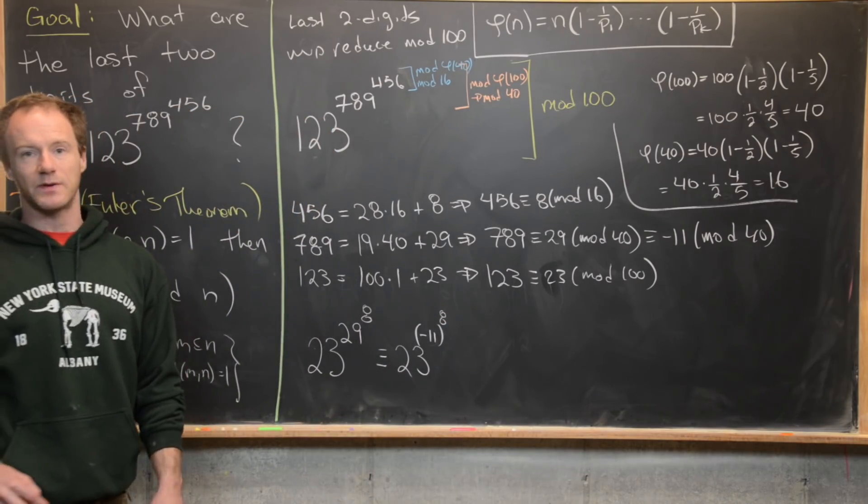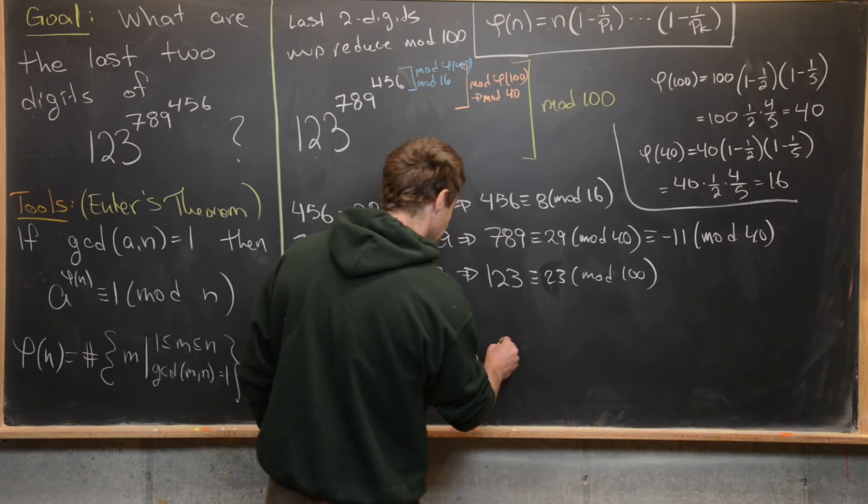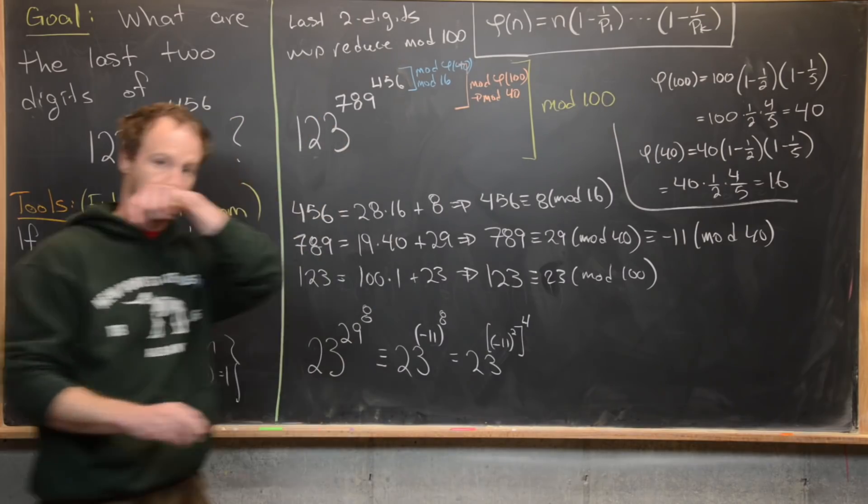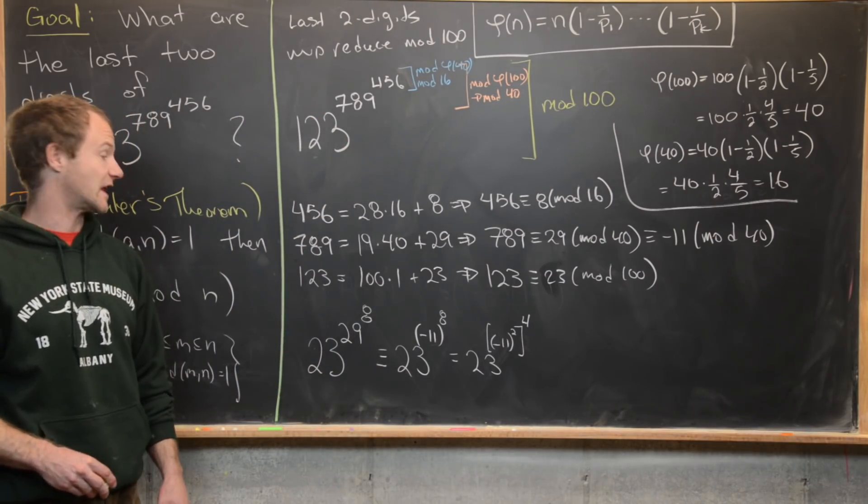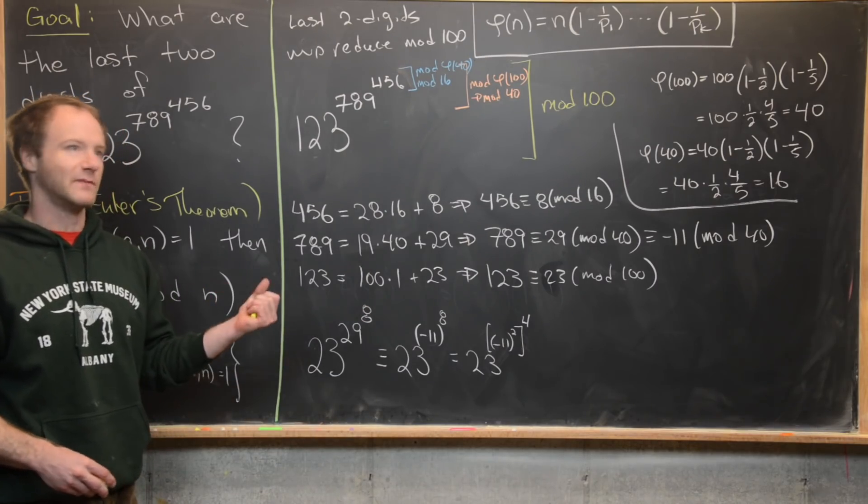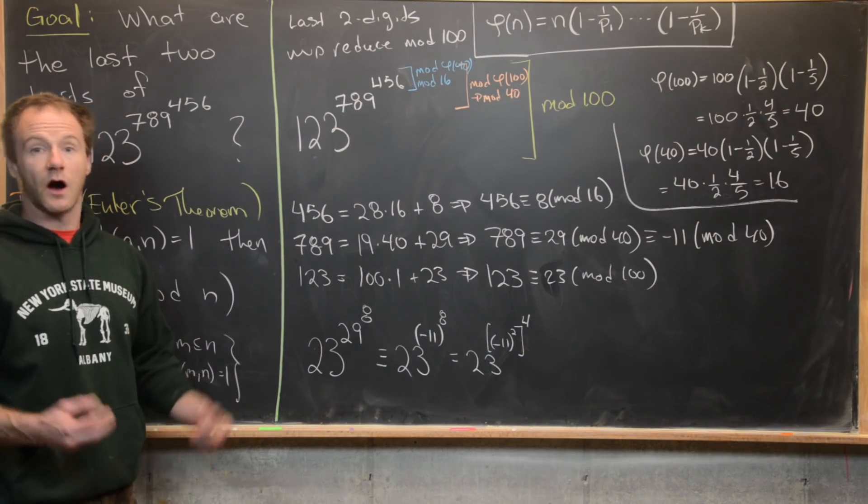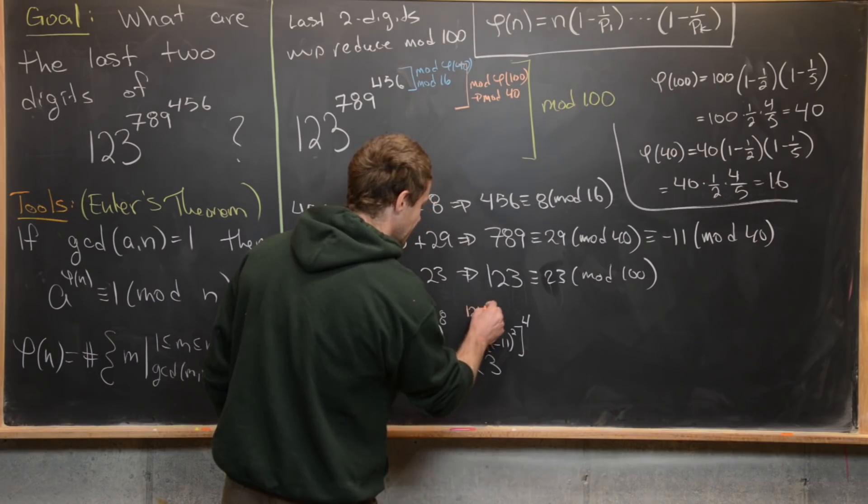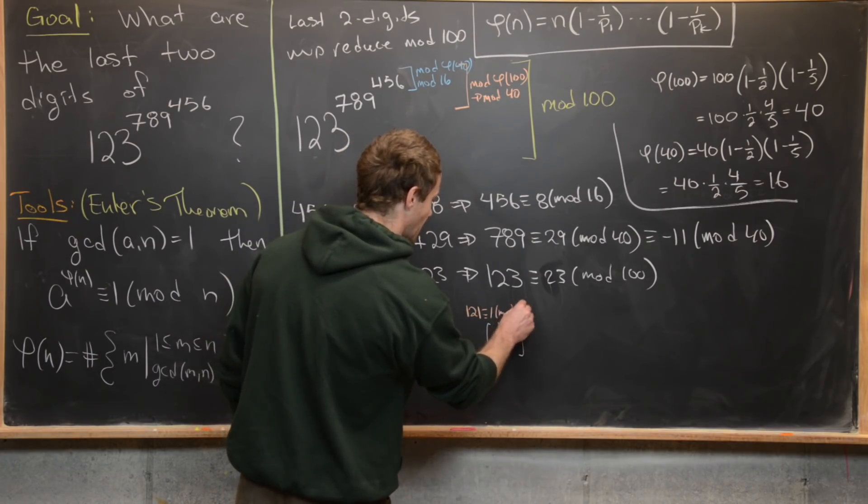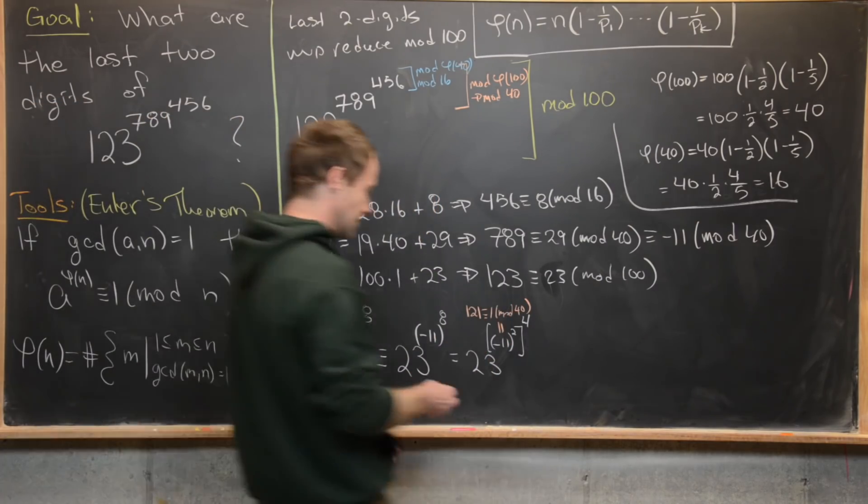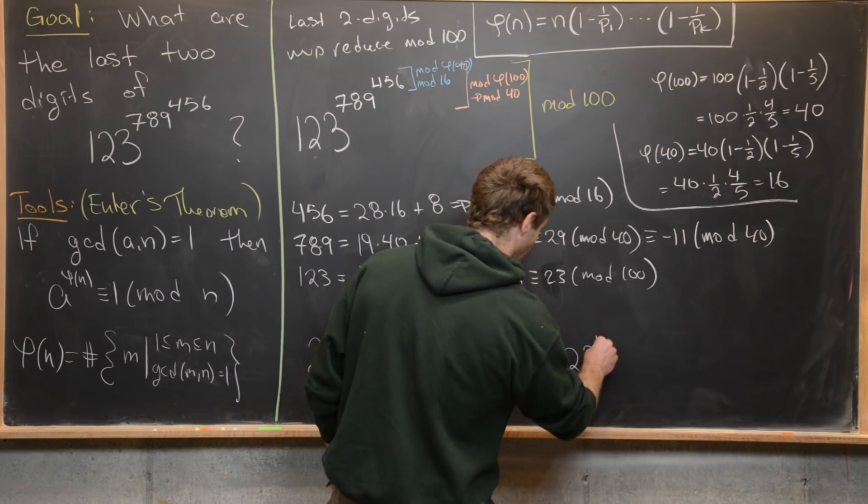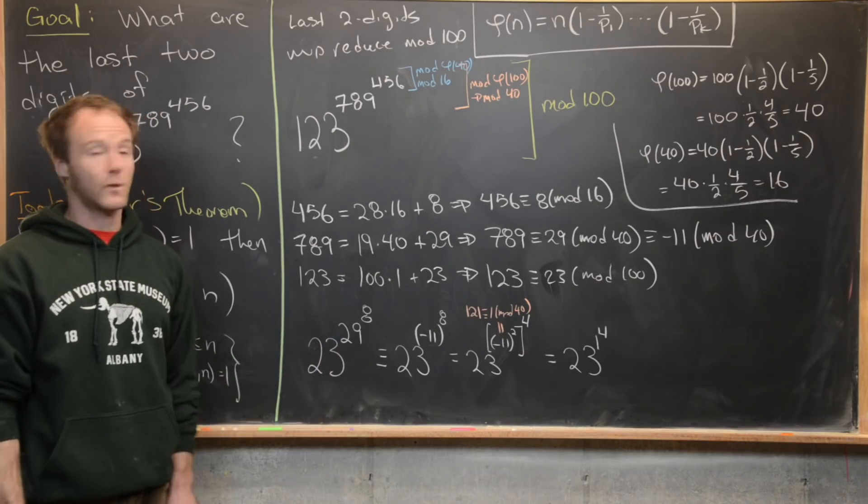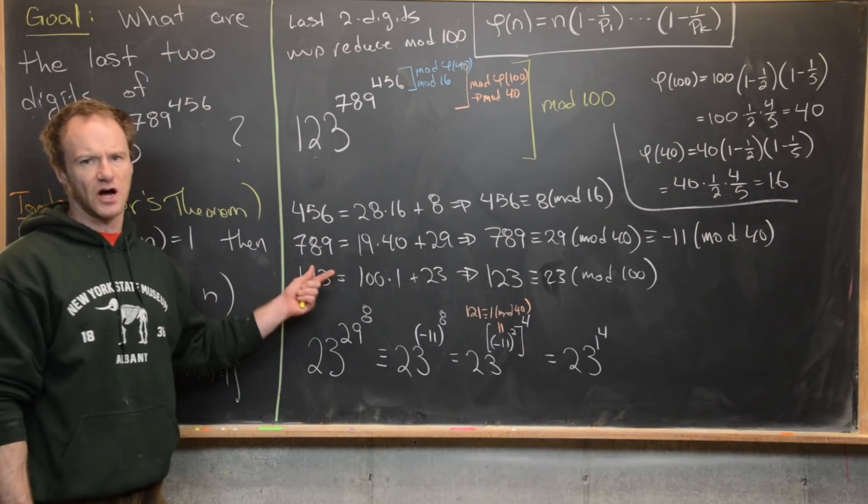But then maybe we'll split this eight up into four times two. So that gives us 23 to the minus 11 squared. And then all of this to the fourth power. But that's actually easier than it looks. Because minus 11 squared, that's going to be minus 11 times minus 11, which is 121. But this exponent is working mod 40. So this being 121 is especially helpful because that's congruent to one mod 40. And so now what we can do is rewrite this as 23 to the one and then that one is being raised to the fourth power. Again, because we reduced this mod 40 because we're working within that stage of the Euler's theorem.